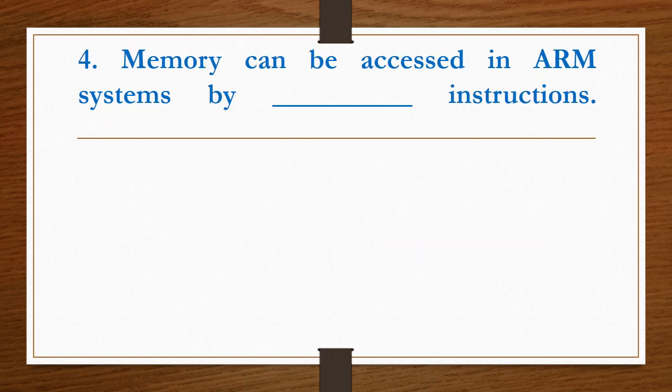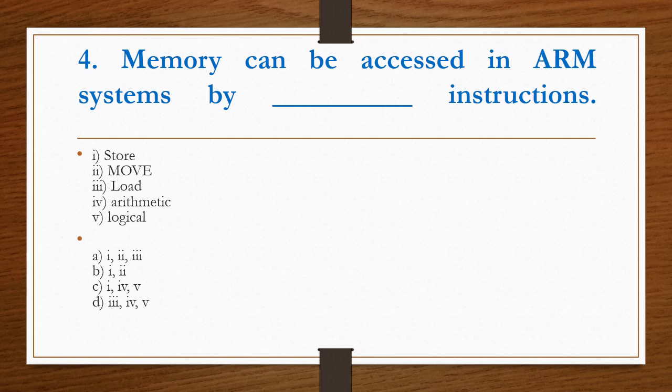Next question: Memory can be accessed in ARM systems by which instructions? Five instructions are given. We have to choose which is the correct instruction. Store and Move instructions are used for accessing memory. Option B is the right answer.